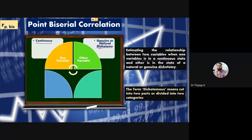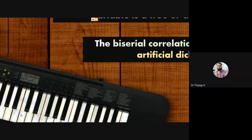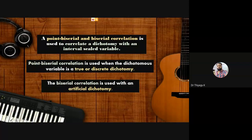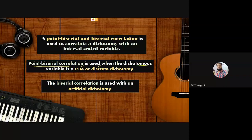The term dichotomy means divided into two categories. The point-biserial correlation is used when the dichotomy is true or discrete — also called natural dichotomy. We are talking about point-biserial only now; we forget the artificial. When the second variable is dichotomous but in an actual format, you go with point-biserial. That's what we have to ensure before doing any correlations.